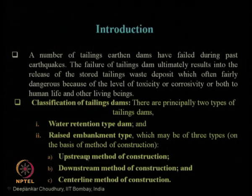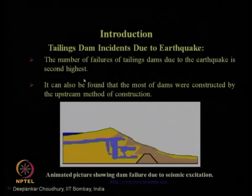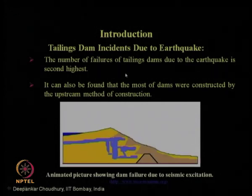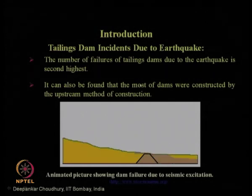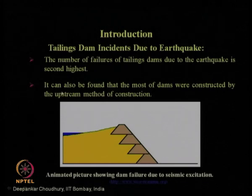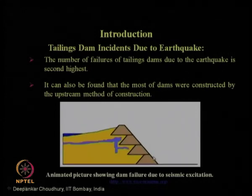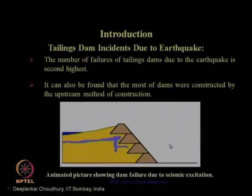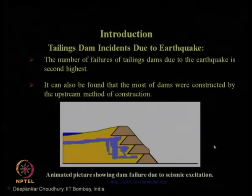The failure of tailing dams is shown through an animated picture. The total number of tailing dam failures caused by earthquakes is the second highest in the world according to available literature data as of 2001. Most failed dams were constructed by the upstream method of construction. During seismic events, once failure occurs, the entire downstream region gets washed away.